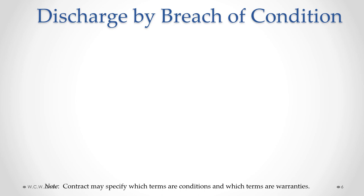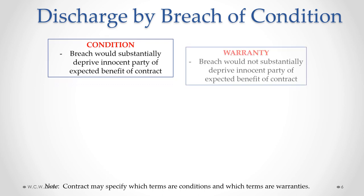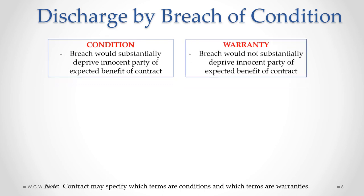The next type of discharge is discharge by breach of condition. This involves the innocent party being relieved of their obligations under the contract because the other party has committed a breach. There are two types of terms in a contract that may be breached: a condition and a warranty. A condition is one where, if breached, it would substantially deprive the innocent party of an expected benefit of the contract — more simply, it is a major or important term of the contract.